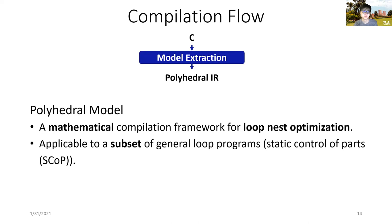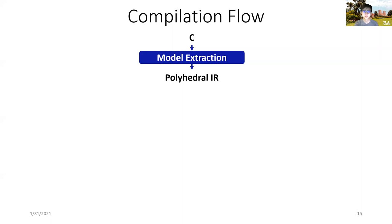Note that the polyhedral model is only applicable to a subset of general loop programs named static control part programs. However, such a category is generally enough to handle most high-performance computing applications. Lastly, the polyhedral compilation framework offers a set of complete and robust tool chains, which makes it possible to build such a flow like AutoSA.